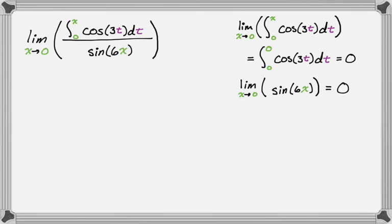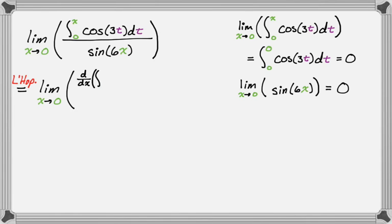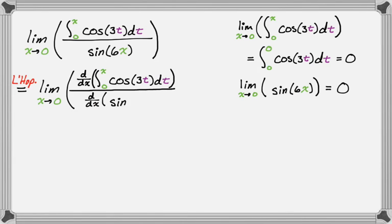So we actually have zero over zero, which means we can use L'Hôpital's rule. I like to write 'equals by L'Hôpital's rule,' then take the limit as x approaches zero of the derivative of the top over the derivative of the bottom. You definitely never want to confuse L'Hôpital's with the quotient rule — they are two totally different things.